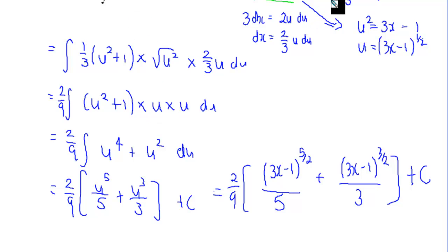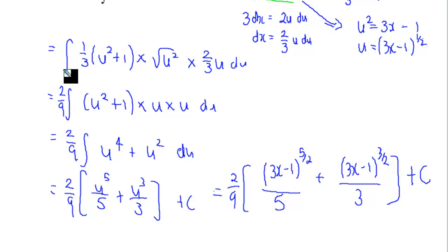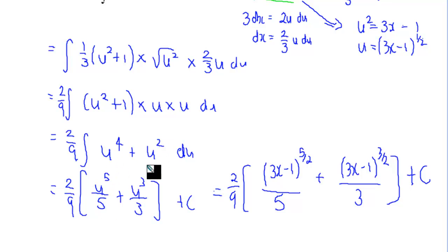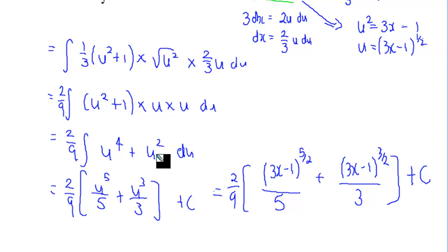We do that substitution: the square root of u squared gives us u. And x by itself is one third of u squared plus 1. Cleaning it all up — the square root of u squared gives u, so the u term, the two thirds and the one third multiply to give two ninths out the front. That gives us u squared times u squared equals u to the power of 4, and u squared times 1 gives u squared. Integrating gives u to the power of 5 over 5, then substituting back u equals square root of 3x minus 1. And u squared integrates to u cubed over 3.